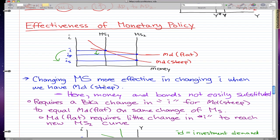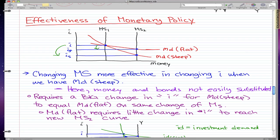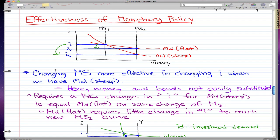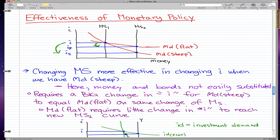When we have MD steep, just want to remember there's a fact that money and bonds are not easily substituted. This point pretty much talks about that it requires a big change in I for MD steep to equal MD flat on same change of MS. So for MD steep to get from MS1 to MS2, it requires a big change in I to get to equilibrium. But for MD flat to get from MS1 to MS2 requires just a small level change to get to equilibrium.